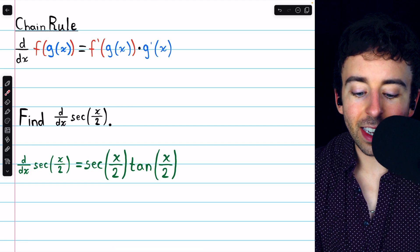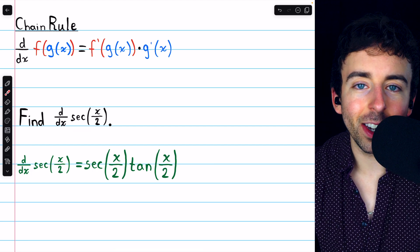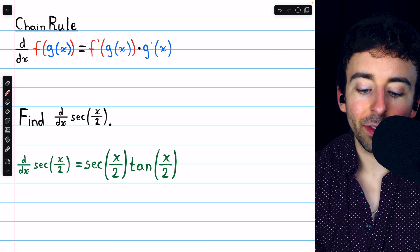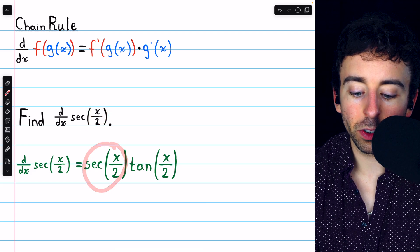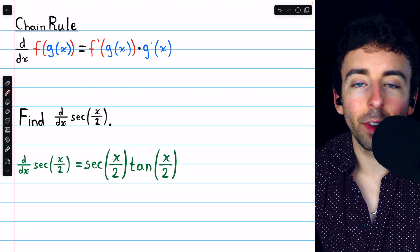The derivative of secant x is secant x tangent x, but remember we need to leave the inside unchanged, so we're going to have secant of x over 2 times tangent of x over 2.